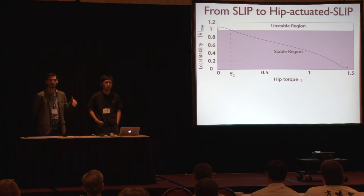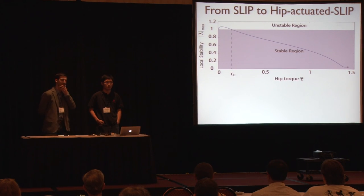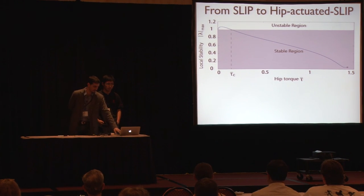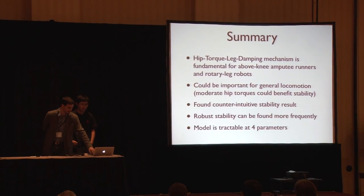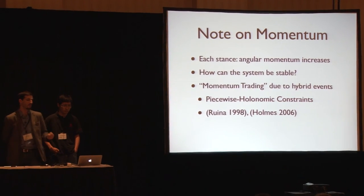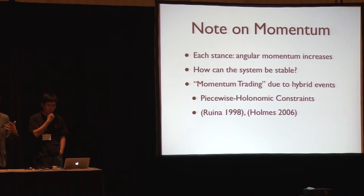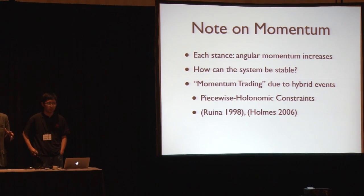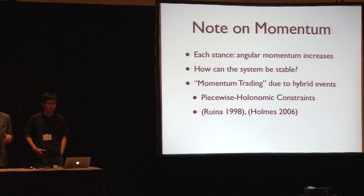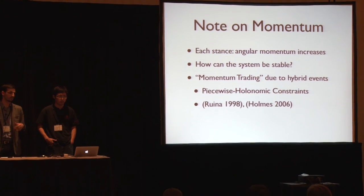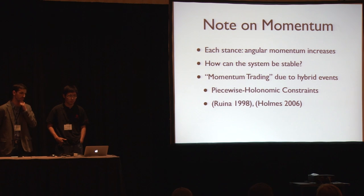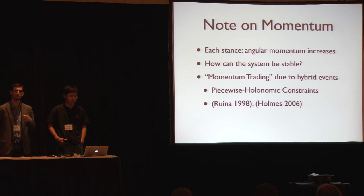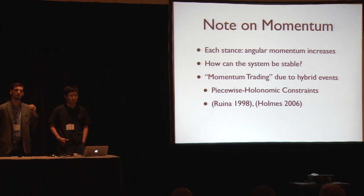Eventually it does stabilize above some critical value. With each stance, the angular momentum increases — so how can the system be stable? It has to do with a momentum-trading issue arising from the hybrid transitions in the model, going back to work by Ruina and Holmes on piecewise-smooth dynamical systems and restitution constraints. The stability results are counterintuitive — not always the way you would expect.